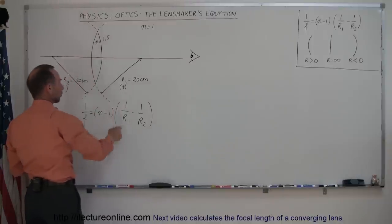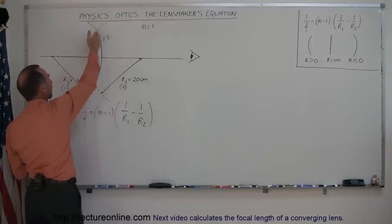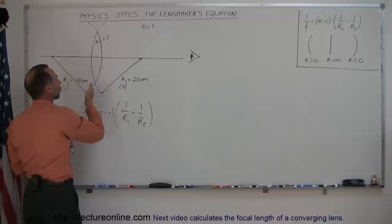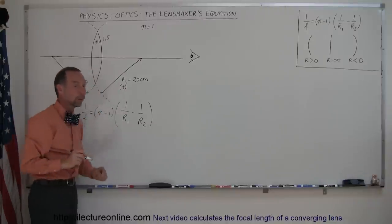Let's say that the curvature of the second part of the lens, the backside of the lens right here, it bulges towards the observer. So we call that negative 20 centimeters for the radius of curvature.